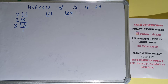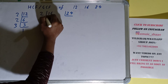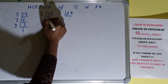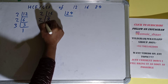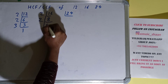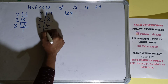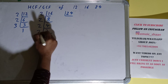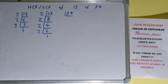Now we need to check for the number 16. Is 16 divisible by 2? Yes it is, and we'll be getting 8. Is 8 divisible by 2? Yes, giving us 4. Is 4 divisible by 2? Yes, giving us 2. And 2 is again divisible by 2, giving us 1. So we are done with 16.